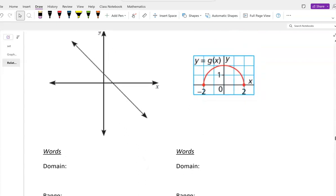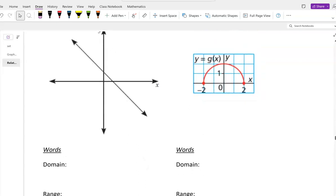Okay, let's continue with domain and range. If you look at this example here, you can see arrows. This means we're going forever in both directions.